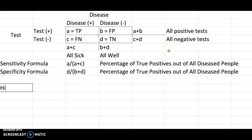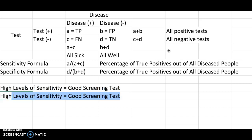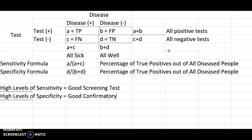One thing to emphasize: high levels of sensitivity equals a good screening test, because very few people will slip through the cracks. High levels of specificity equal a good confirmatory test. Now there are tests that are extraordinarily high in both sensitivity and specificity, but those tests are always more expensive to run, so you want to be careful when selecting your tests in those scenarios.